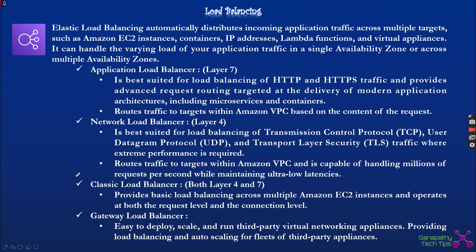Load balancing distributes traffic across a fleet of EC2 instances. Traffic comes into the load balancer, a listener listens on a specific port, and traffic is diverted to the EC2 machines or containers sitting behind it — typically running in an Auto Scaling Group in a horizontally scalable manner.